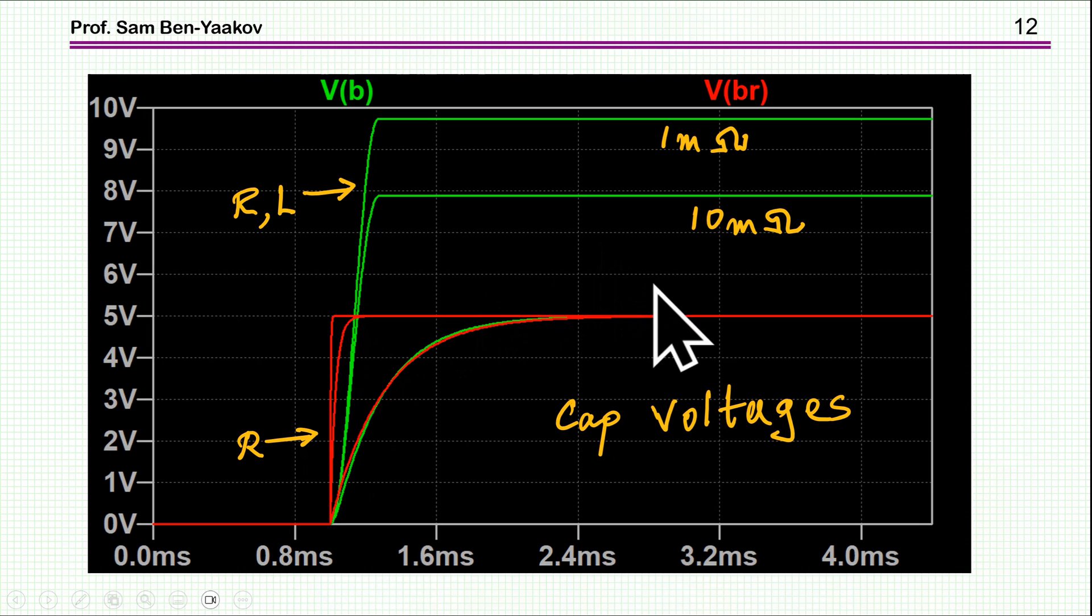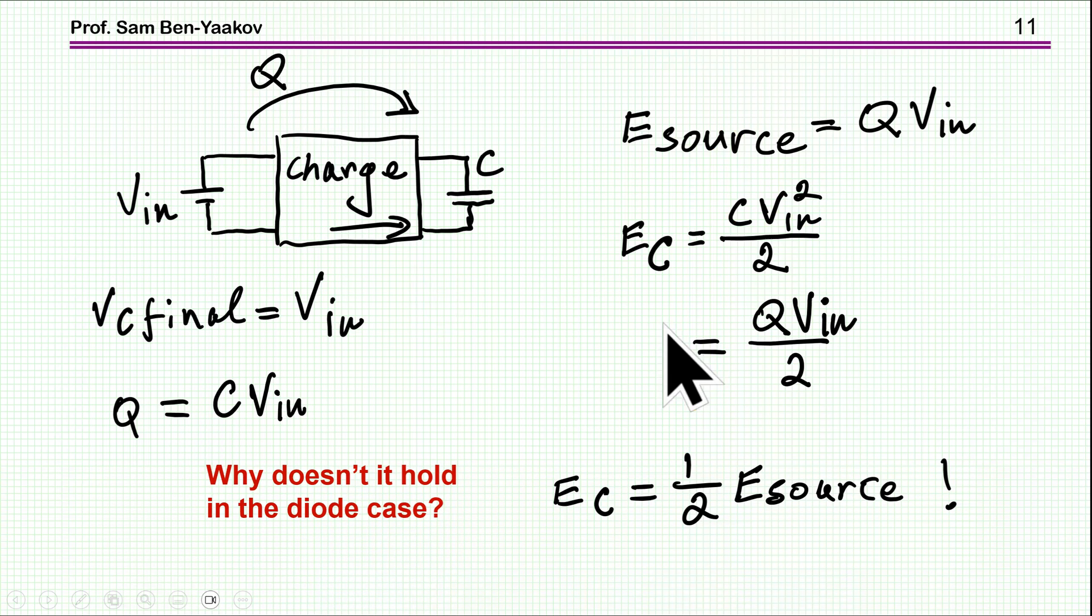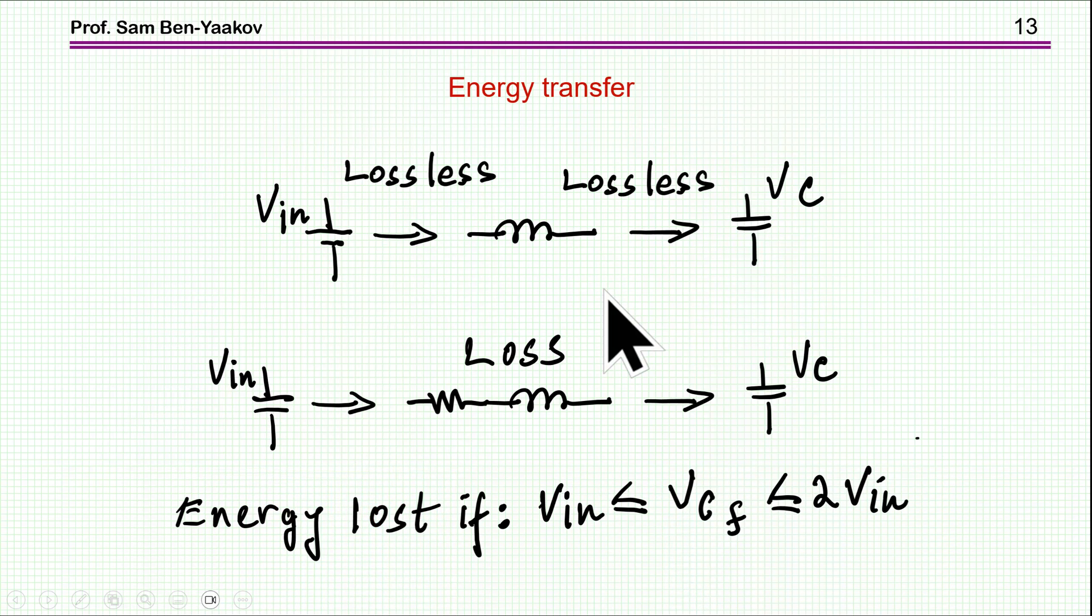In the case of an inductor, it really depends on the quality factor. And the voltage could be higher. In fact, with a very high quality factor, that is, with a very small resistance, then you can get twice the input voltage, that is, 10 volts. And you can see that in the 1 milliohm case, we are already approaching the 10 volts. So, the point is that the analysis I've shown is incorrect for this case. In this case, the capacitor has a higher voltage than Vin, and therefore, the energy lost could be lower.